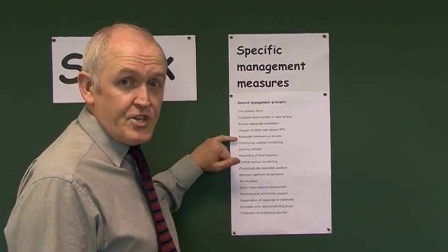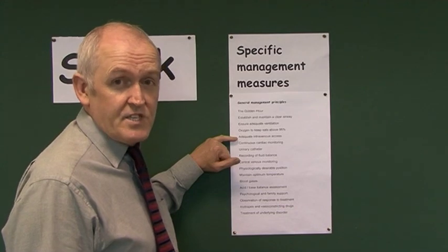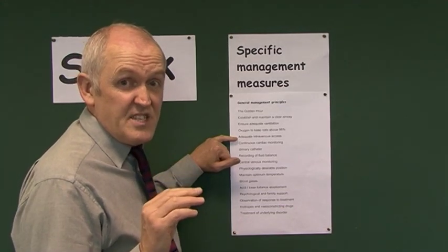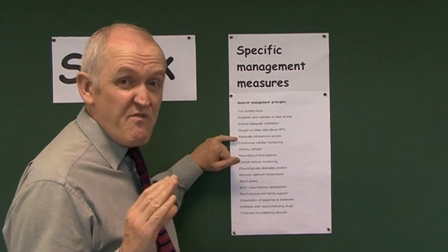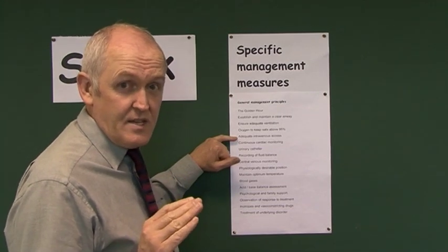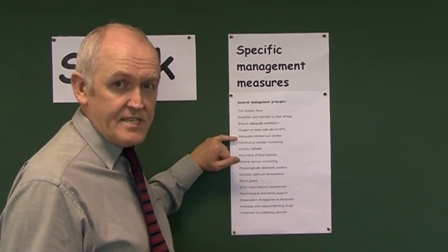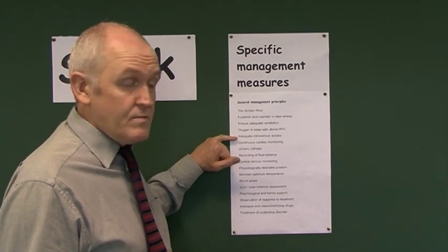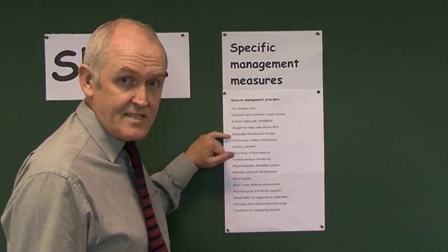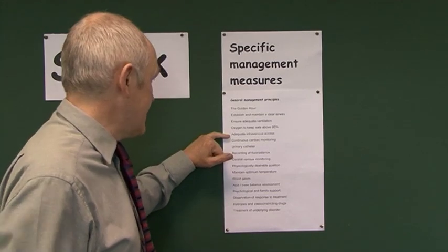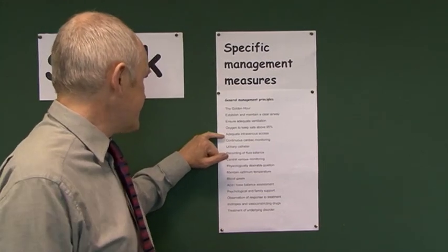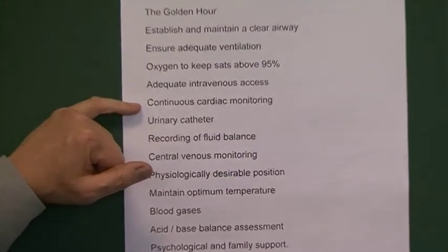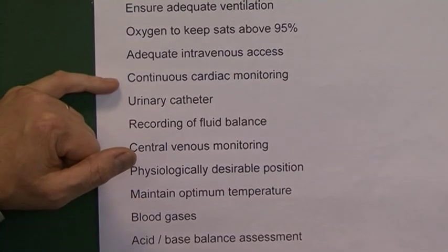We want two cannulas because if one fails, the patient's life depends on having the other cannula available. As shock develops, alongside arterial peripheral vasoconstriction there is also peripheral venoconstriction, so if you don't get cannulas in at an early stage you may never get them in at all. Get two large cannulas into these patients early.